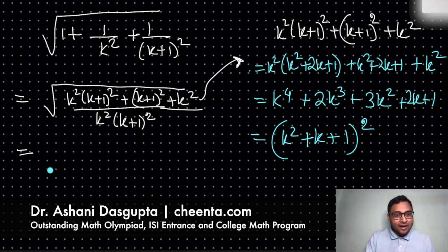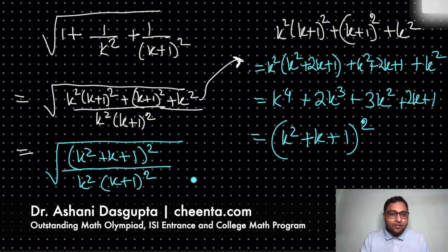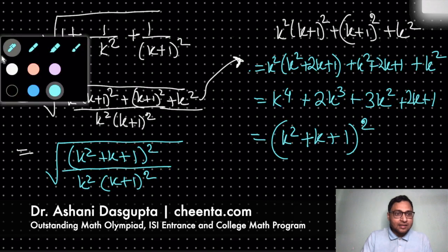Okay, so let's come back to this final square root again. This is (k squared plus k plus 1) whole squared in the numerator and k squared times (k+1) squared. So what we have got here is, let's change the color. This is okay. This is different. Let's separate this out.